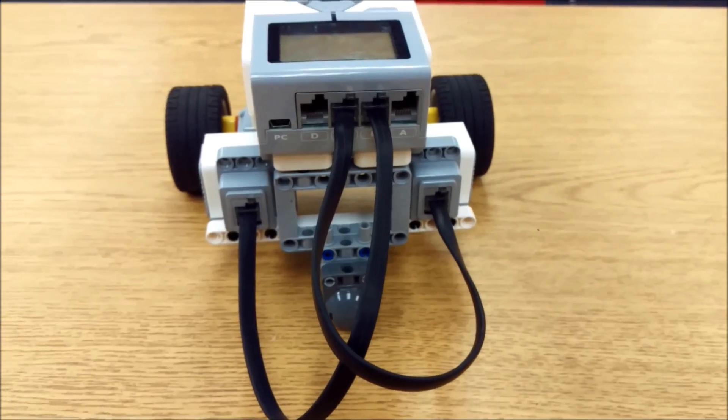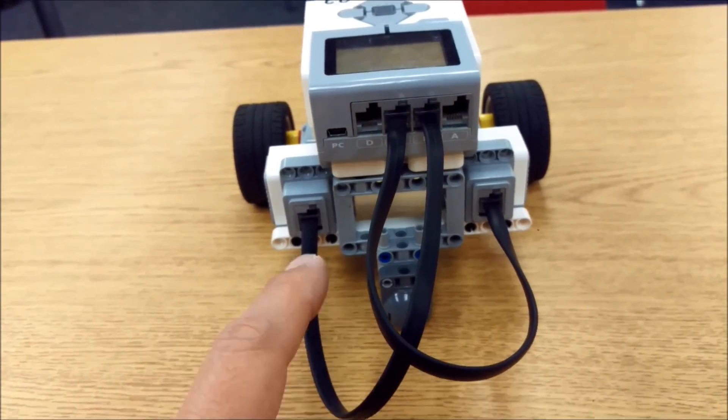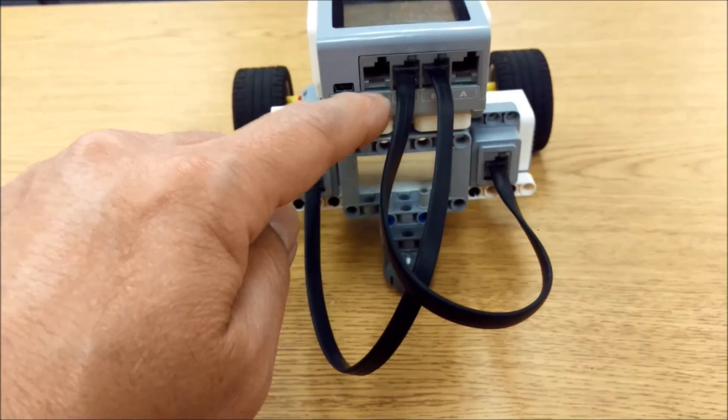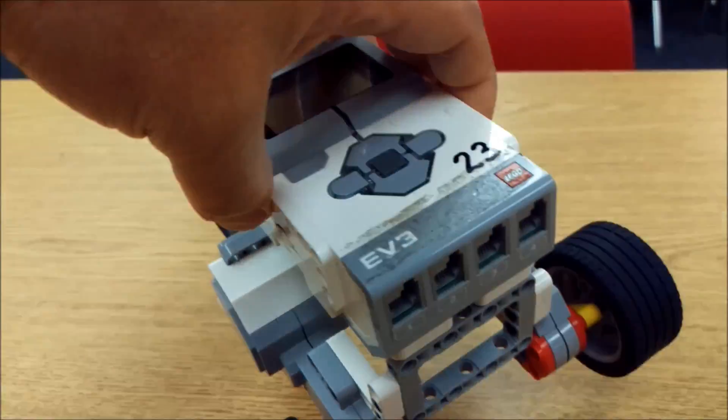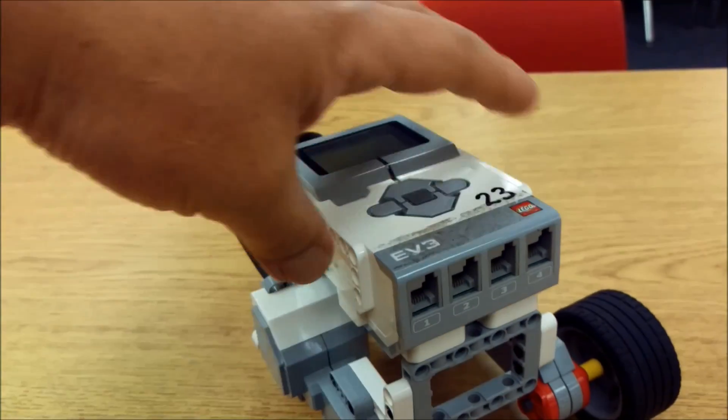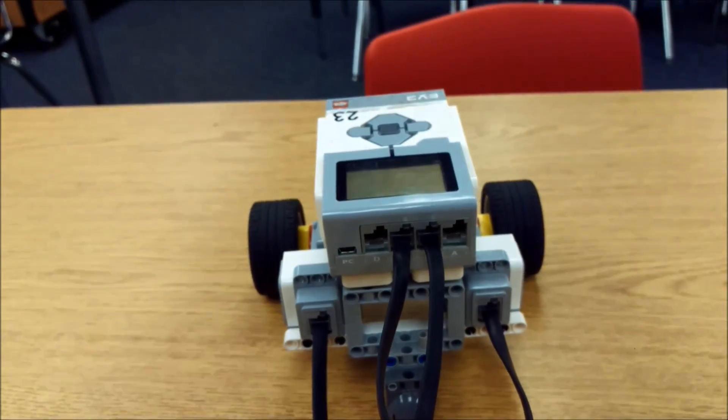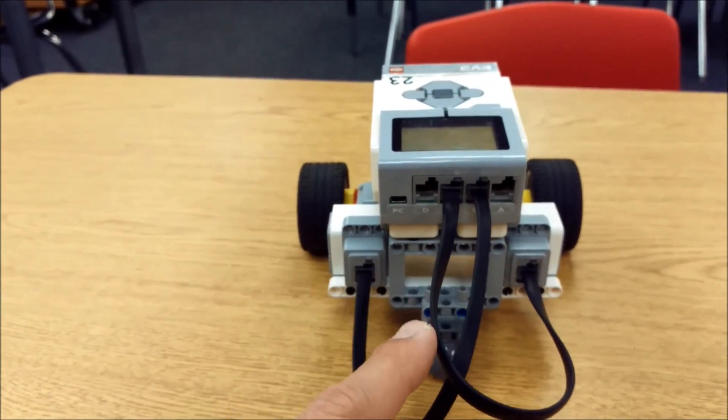Okay, so now when you put the cables in, here is why we're going to be crisscrossing the cables. So this motor would usually come up here into C and this one would come into B. The reason why we're flipping it is because the brick is upside down again. So anything that you program, if you don't crisscross the cables, a left is now going to be a right and vice versa.